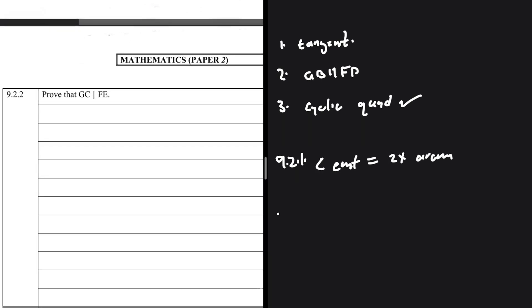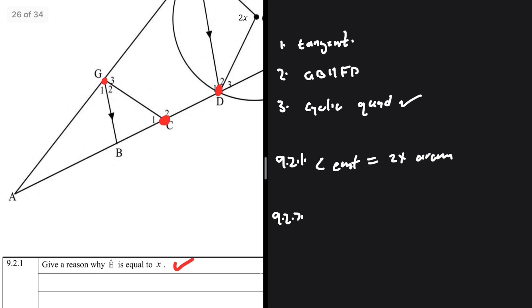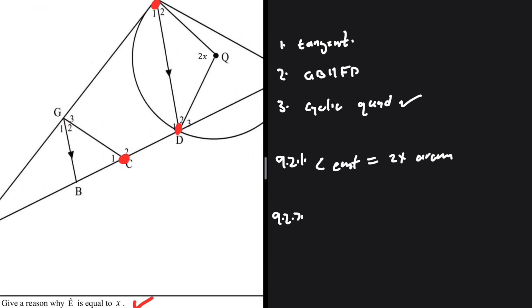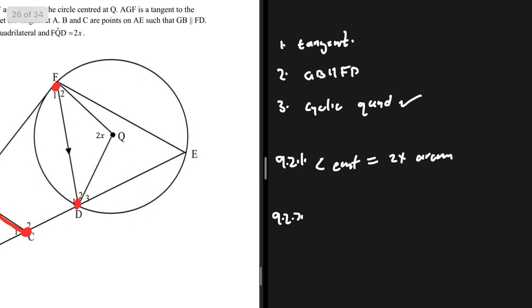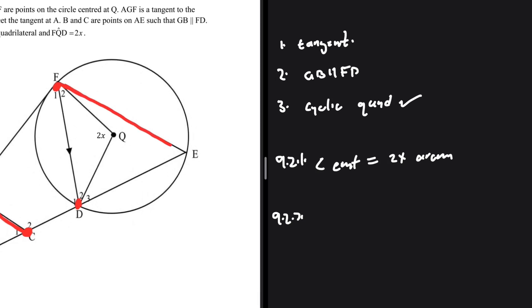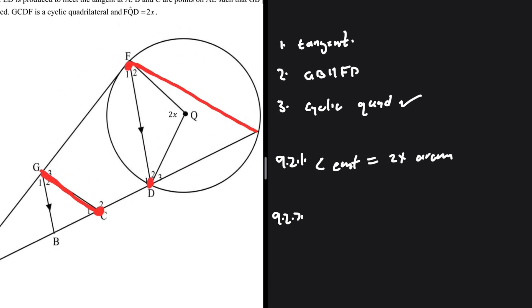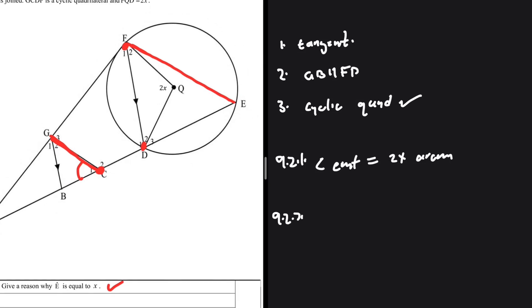Question 9.2.2: prove that GC is parallel to FE. We need to show that GC and FE are parallel. There are a few ways: if C1 equals angle E, the lines are parallel; if G1 equals F1 plus F2, they're parallel; or if the two co-interior angles add up to 180 degrees, they are parallel. We know that E is x.